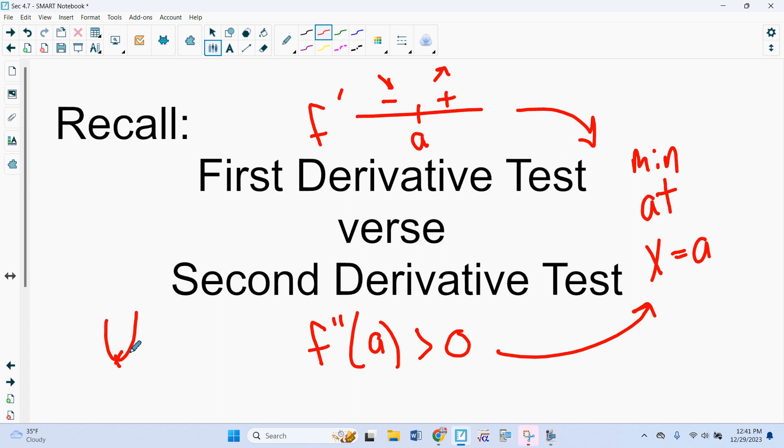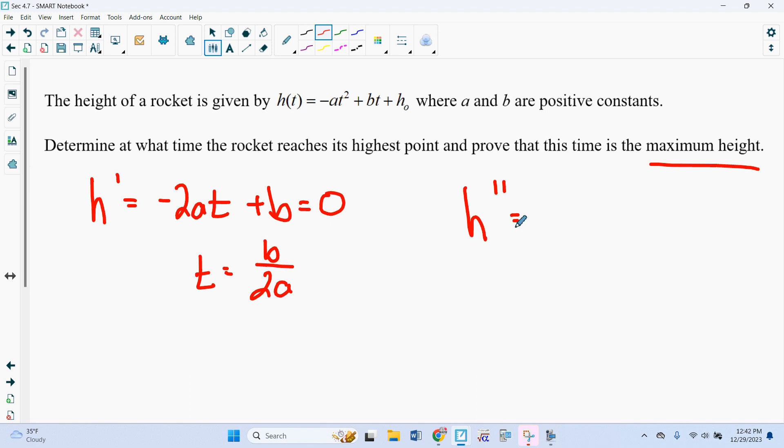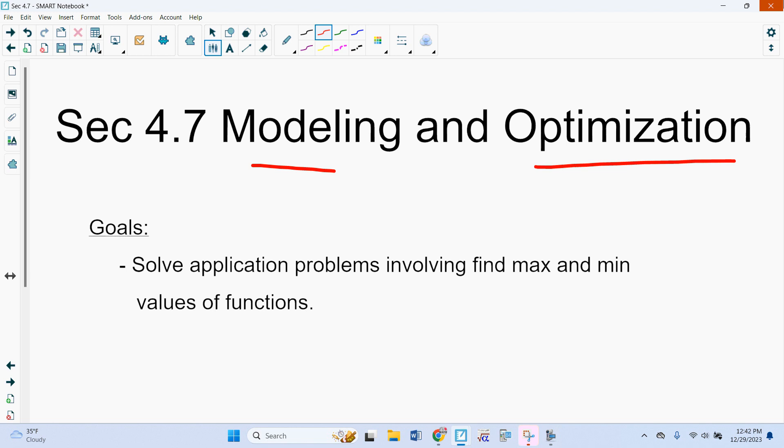So back here, we were able to determine that. I would do this one with the second derivative test, just because I think this is easier. We would find the second derivative, which is negative 2a, because a is a positive constant. This is less than 0, which tells me, if it's less than 0, that this value is a maximum. All right. All the stuff we need to remember to recall to get started with our optimization problems.